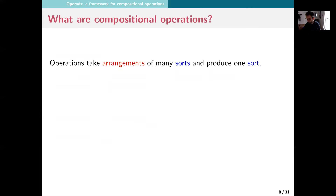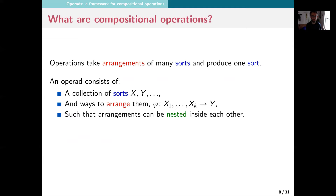E pluribus unum — out of many, one. An operation takes an arrangement of many sorts to produce one sort. If you've got a bunch of things of various sorts, you might be able to look at them all and produce something else from them. Different sorts of dynamical systems, different sorts of tensors, different sorts of information. Someone comes to you and says, 'I've got all these dynamical systems wired together, and I've arranged a picture with pixels in it, and the whole picture is going to itself be a pixel in some larger thing.' So I'm going to take pictures and make a new picture — like a collage. Those are arrangements.